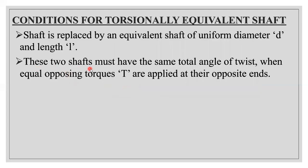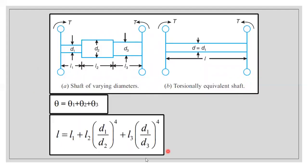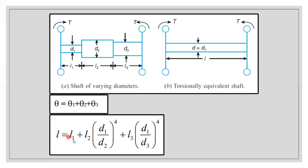So the second condition is that these two shafts must have the same total angle of twist when equal opposing torques are applied at their opposite ends. The final formula for the length of the torsionally equivalent shaft is: L equals L1 plus L2 times (d1/d2) to the power 4, plus L3 times (d1/d3) to the power 4.